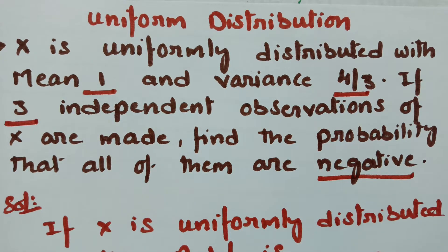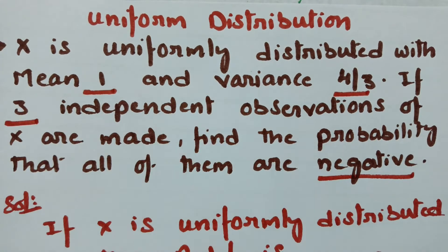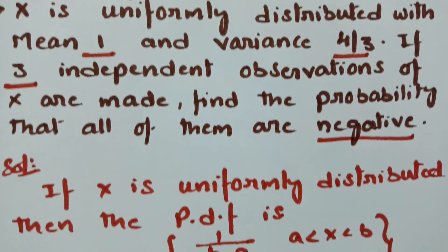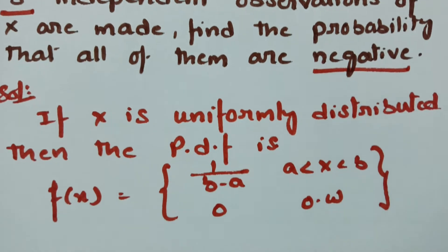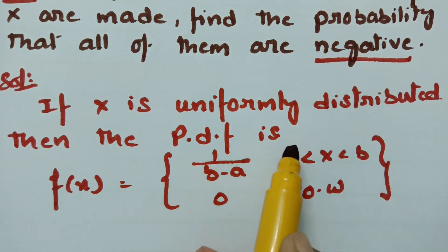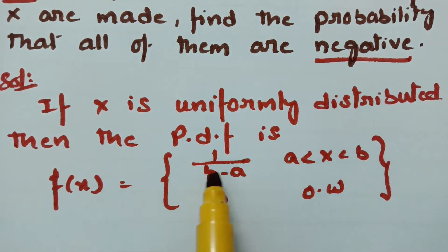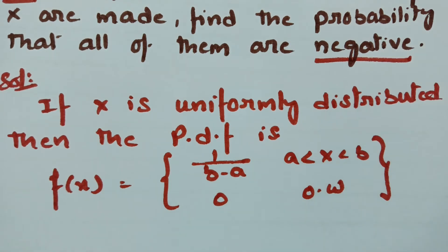First of all, it is given that x is uniformly distributed. If x is uniformly distributed, then the probability density function is given as f(x) = 1 / (b - a), where x lies between a and b, and 0 otherwise.